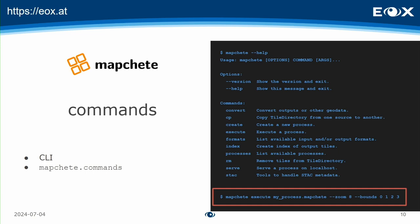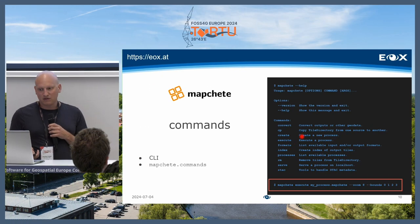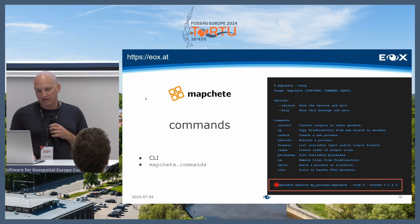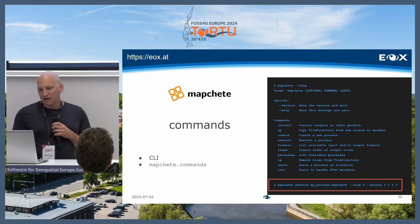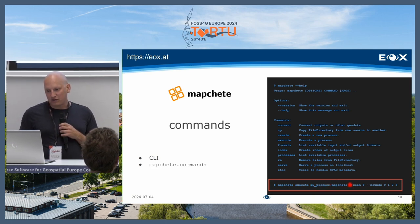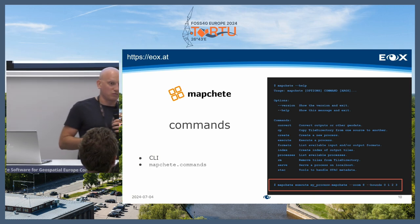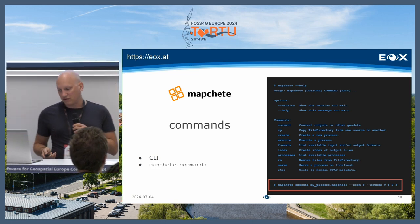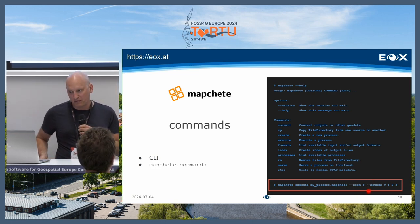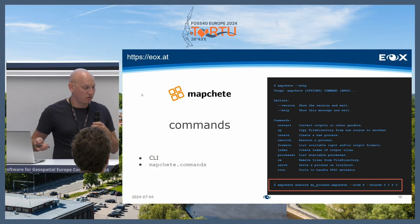We also need a set of commands. Mapchete ships with a set of command line tools. The most important one is of course 'execute'. If you're finished with your process, you can simply run 'mapchete execute' and point to the process file. You also have additional flags — if you want to do a subset, you can add the bounds parameter, or only process certain zoom levels.